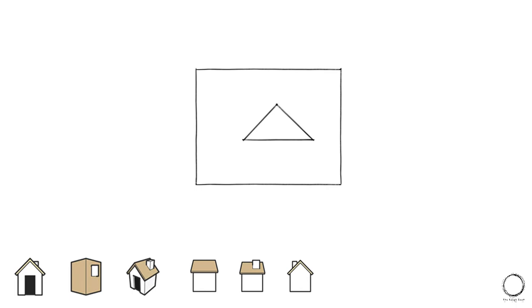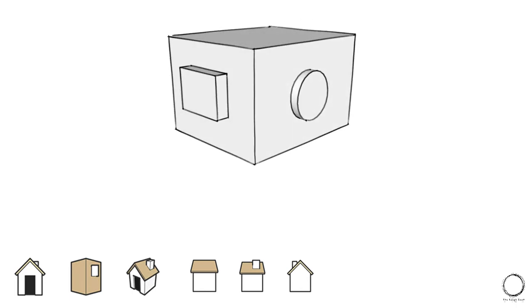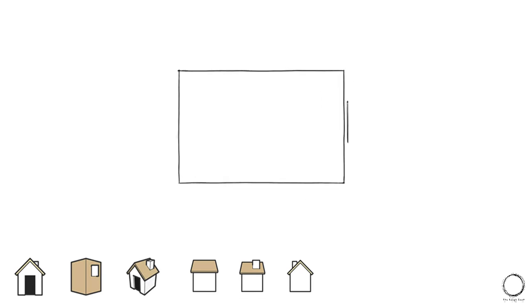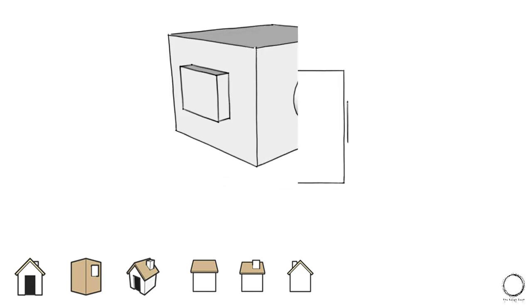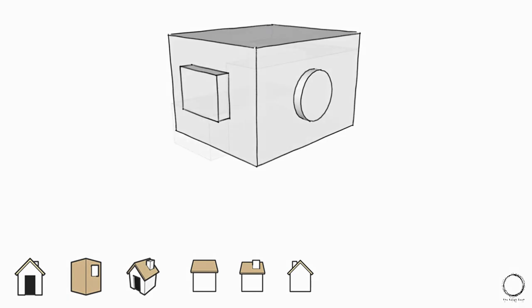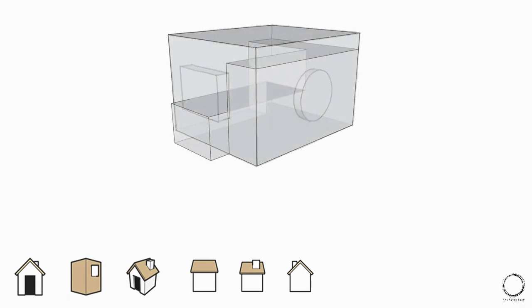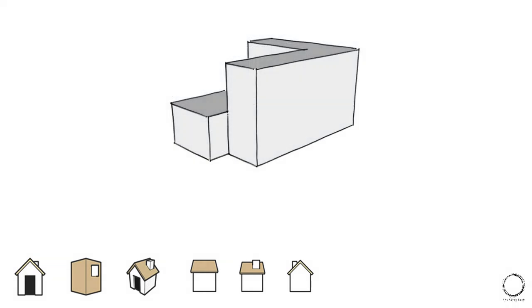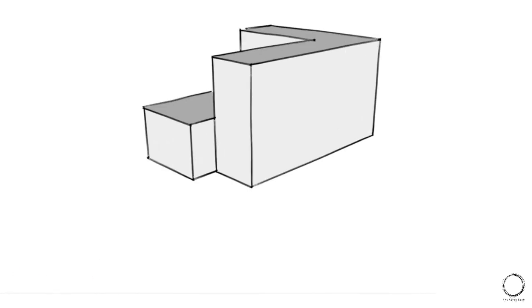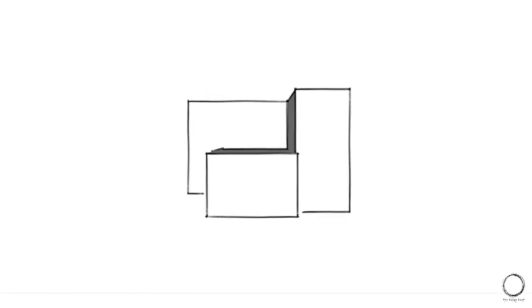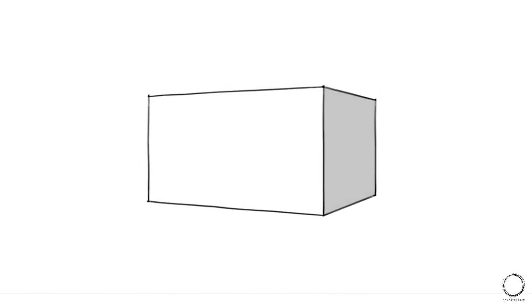Now let's talk about how the elements of design are converted into orthographic projections. Orthographic projection is a means of representing a three-dimensional object as a two-dimensional drawing. It is a form of parallel projection where every projection line is orthogonal to the projection plane. Usually, the plan, front, and sides are drawn to illustrate the object.